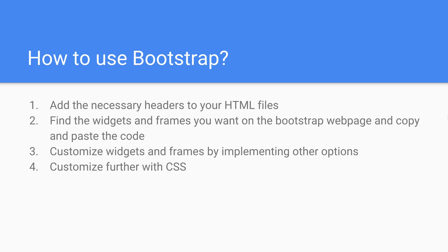Now we'll quickly talk about how to use Bootstrap, then we'll end this section and head on over to the actual web page itself. There are four basic steps to using Bootstrap. The first will be to add the necessary header tags to your HTML file. Once we have those header tags added, that gives us access to the entire Bootstrap framework. We then go online to the Bootstrap web page, find the widgets and frames that we want, and basically just copy and paste the code. One of the best things about Bootstrap is that it is open source, so we can literally take the source code provided and use that right in our web pages.